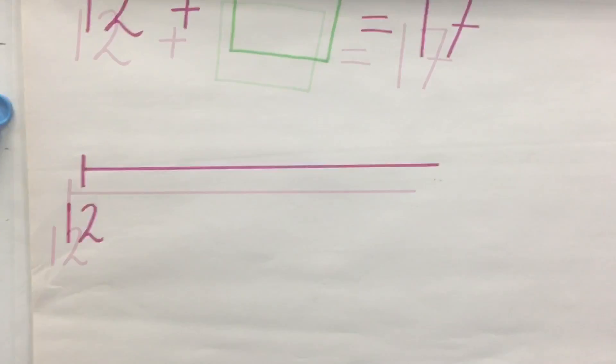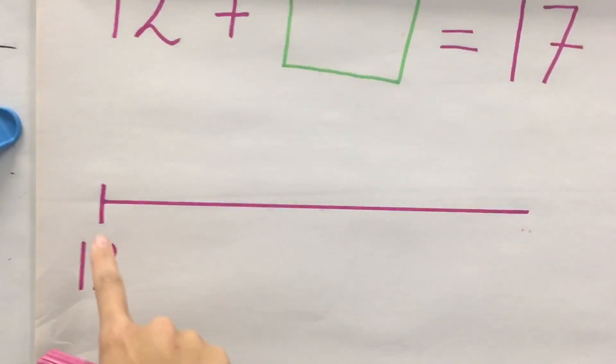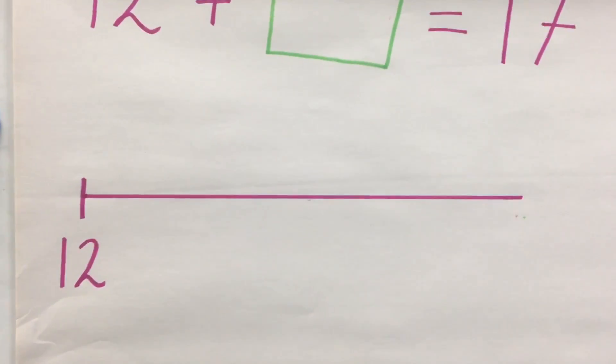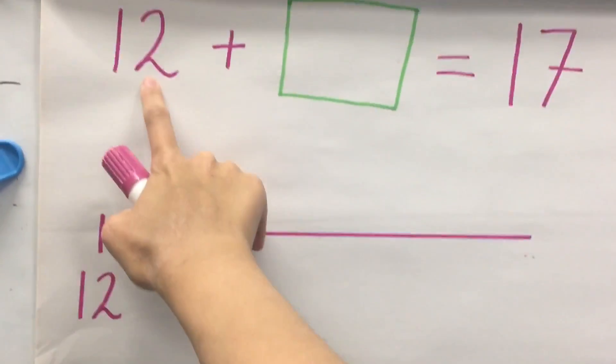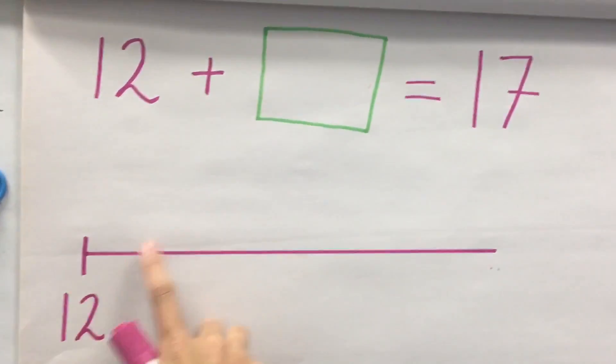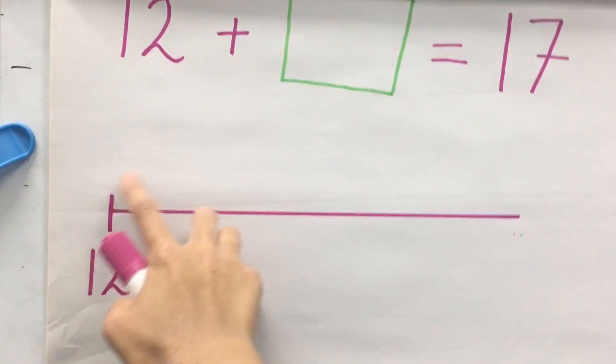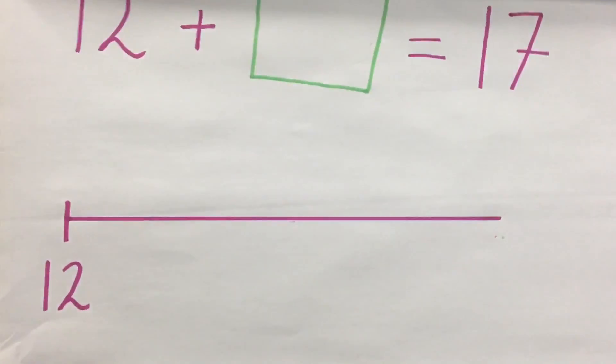So, this is how you work it out. First you draw a straight line as a number line and you're going to start with 12 because that's the number that's given. And you're trying to get up to 17 by jumping on a blank number line.